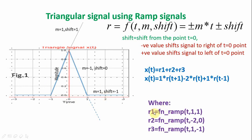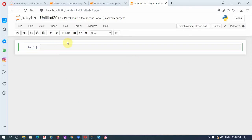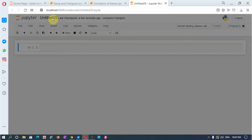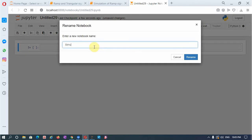When we call the function in Python, this is going to be a function fn_ramp with slope 1 and shift plus 1 for r1; for r2, slope is minus 2 and shift is 0; and for r3, slope is 1 and shift is minus 1. These three ramps are used to generate the triangular signal. With this introduction, let me take you to the Jupyter notebook. I have opened a new notebook and will change the title to simulation of triangular signal.